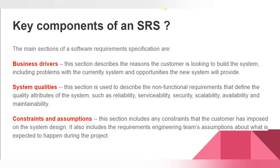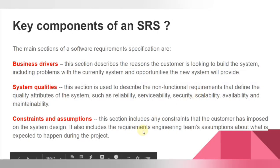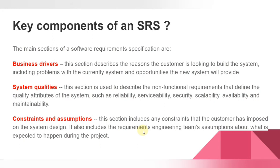The second key component is system qualities. Quality is very important in development. Software quality covers non-functional requirements but also affects functional requirements. This section describes the non-functional requirements that define the quality attributes of the system, such as reliability, serviceability, security, and scalability. These are non-functional requirements related to system quality that directly affect overall requirements.